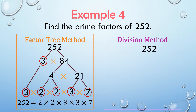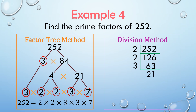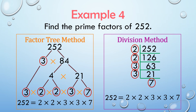Using the division method, we can divide 252 by the smallest prime number, 2. So 252 divided by 2 is 126. 126 can be divided by 2. So 126 divided by 2 is 63. 63 can be divided by 3. So 63 divided by 3 is 21. 21 can be divided by 3. So 21 divided by 3 is 7. Now we have arrived at a prime number, so all the factors are prime. Therefore, the prime factorization of 252 is 2 times 2 times 3 times 3 times 7. Again, we have arrived at the same answer.